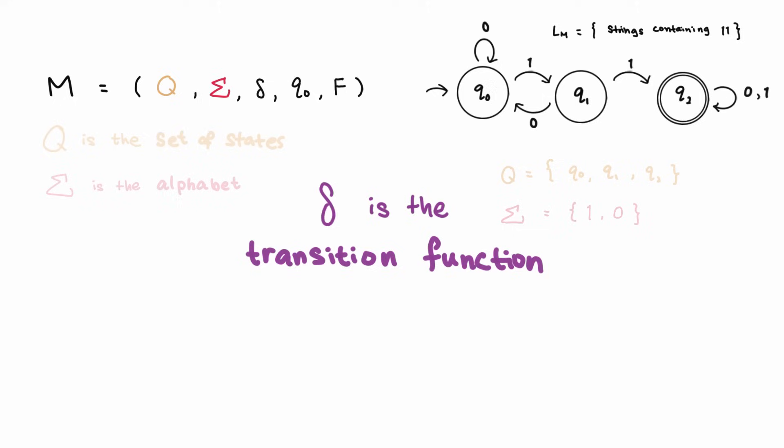Delta is the transition function which tells us where states transition to given an input symbol. For example, Q0 transitions to state Q1 when it reads a 1, and remains in Q0 when it reads a 0. Q1 transitions to Q2 on a 1, and back to Q0 on a 0. And when we reach Q2, we will always remain in Q2.